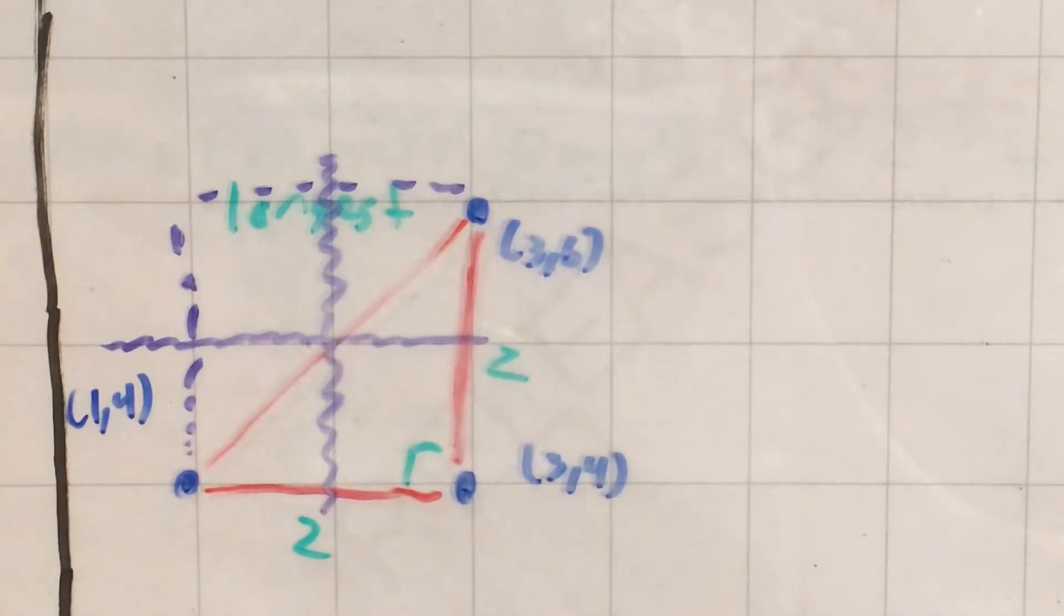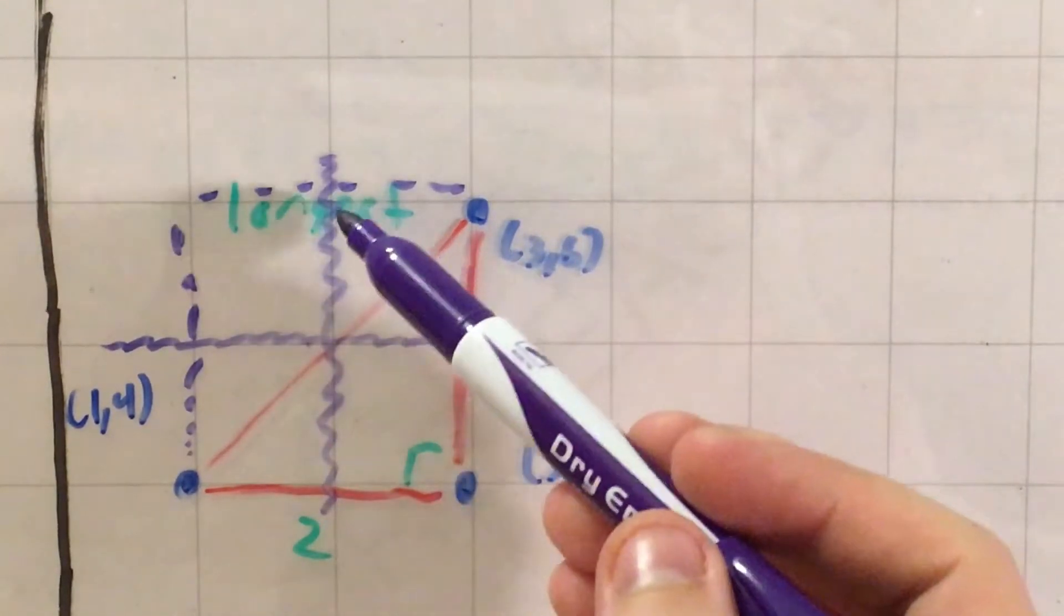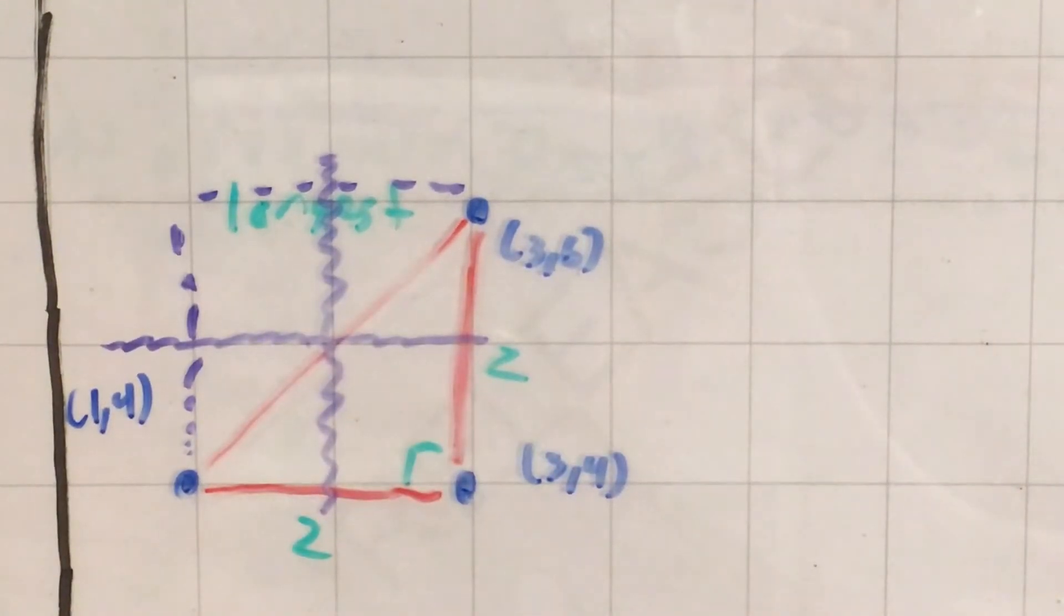Now, these squiggly lines represent my middles, going one square, which is half of two squares, going one square, which is half of two squares. And that actually puts me right on the line, which I was expecting, otherwise I would know I didn't find my midpoint correctly.